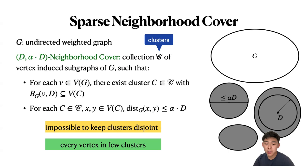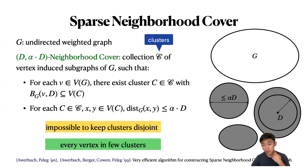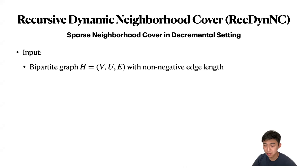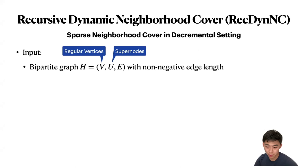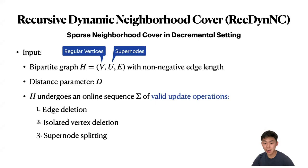Since it is impossible to keep clusters disjoint, we require that every vertex belongs to only a few clusters. There are very efficient algorithms for constructing sparse neighborhood covers in static graphs. For our purposes, however, we need a dynamic version. The Recursive Dynamic Neighborhood Covering problem was introduced by Chuzhoy in her previous work as an intermediate problem — we can think of it as sparse neighborhood cover in the decremental setting. The input is a bipartite graph H with non-negative edge lengths, with vertex sets V (regular vertices) and U (supernodes), distance parameter d, and H undergoes an online sequence of valid update operations: edge deletion, isolated vertex deletion, and supernode splitting.